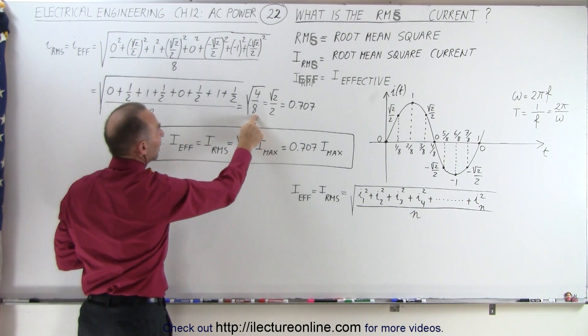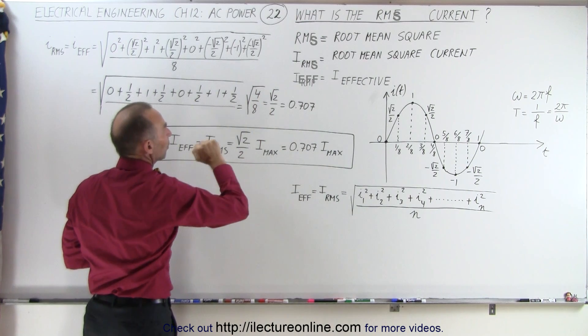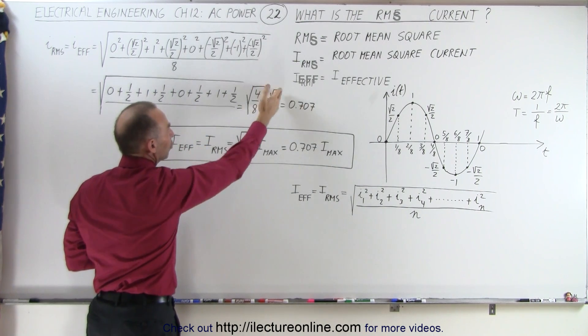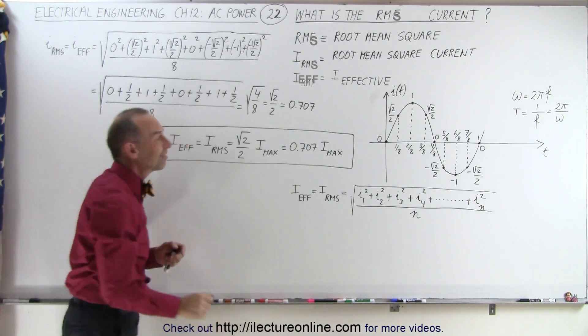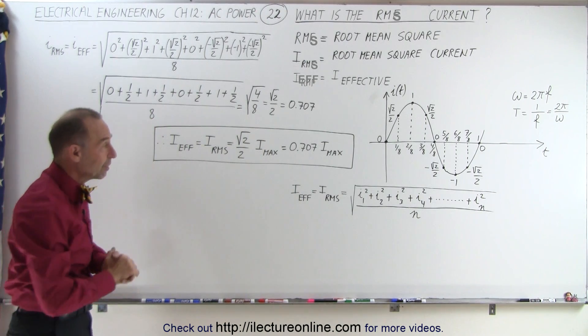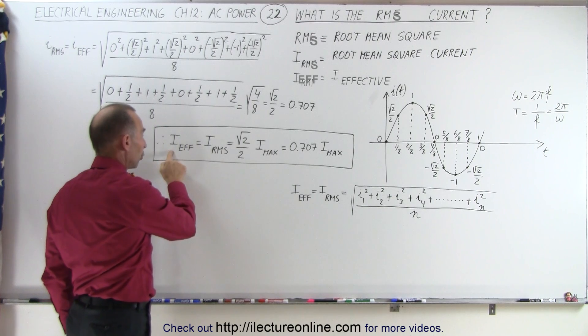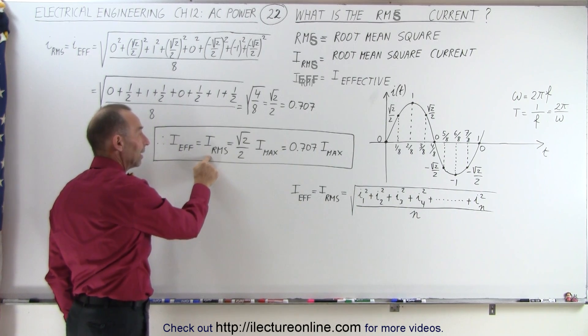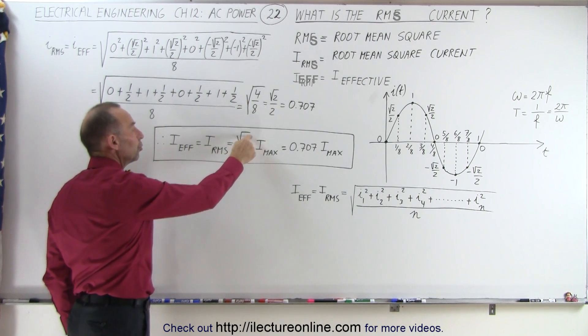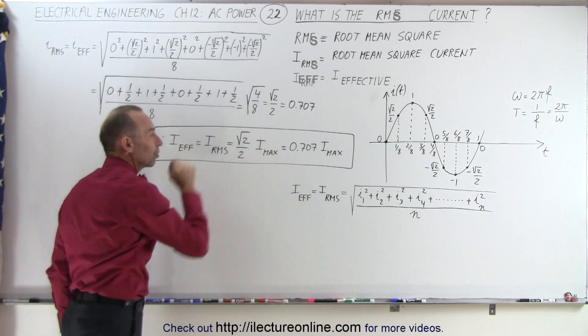Sum them up, we get 4 over 8, or 1/2, take the square root of that, and we get the square root of 2 over 2, or 0.707, which by now should be a familiar value. So essentially, the effective current, or the root mean square current, is equal to the square root of 2 over 2 times the maximum current.